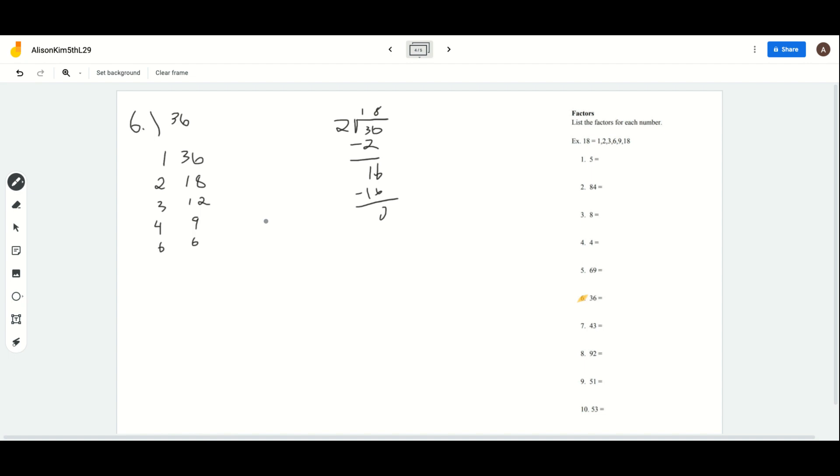Now let's move on to 7. Unfortunately, 7 cannot go into 36 because it's just not a factor. You can find that out by doing 36 divided by 7. The closest that 7 can go into 36 is 5 times, and that gives us 35. That gives us a remainder of 1, so 7 is not a factor of 36.